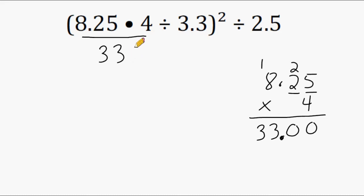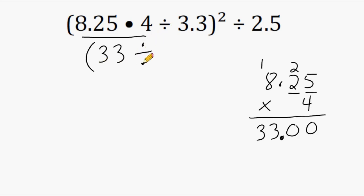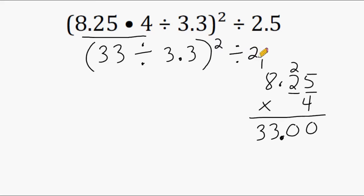After writing the answer to the part you do first, you have to bring everything else down from the previous step that you did not touch yet. So let's bring down the parentheses, the division sign, the 3.3, close the parentheses, and bring down our exponent, then the division sign and 2 and 5 tenths.